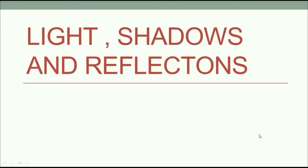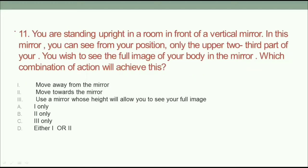Hey guys, welcome to Study with Fascination. This is NSO Olympiad Chapter 7. Question number 11: you are standing upright in a room in front of a vertical mirror. You wish to see the full image of your body in the mirror. You currently see two-thirds of your body and want to see your full body. Which combination of action will achieve this?